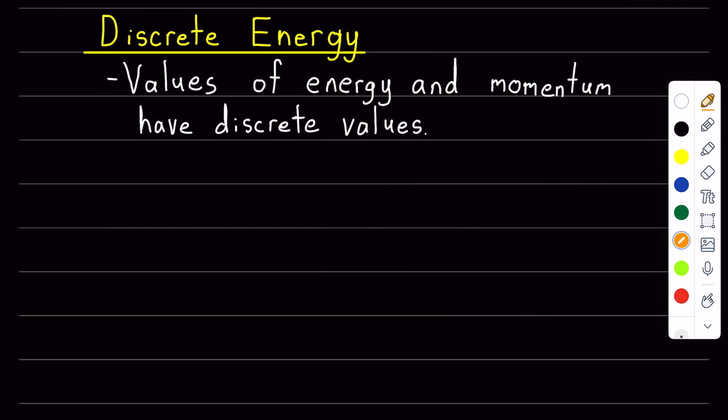So photons are an example of a packet or quanta of energy. Energy is quantized, which means it only has certain distinct values.